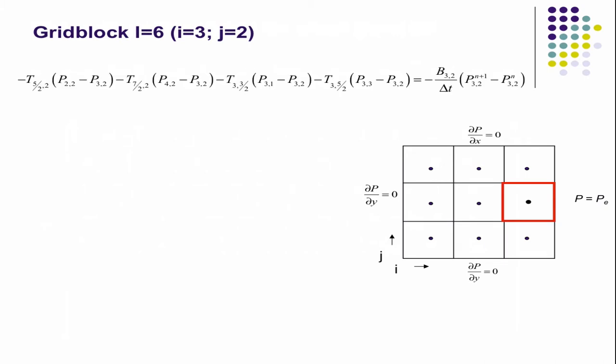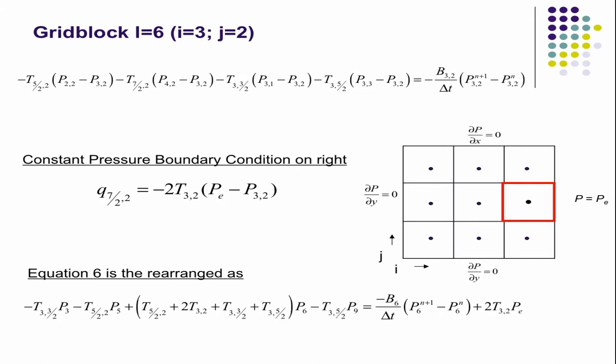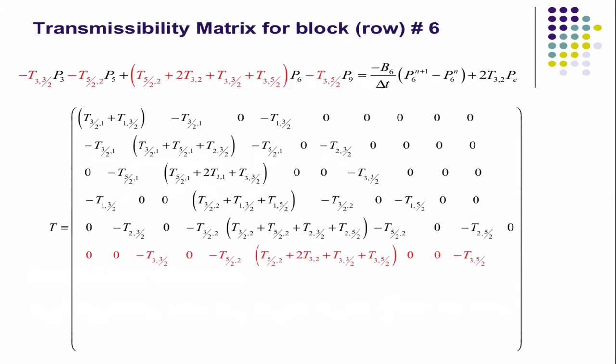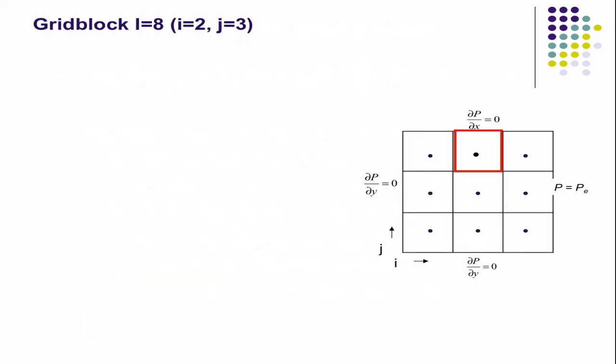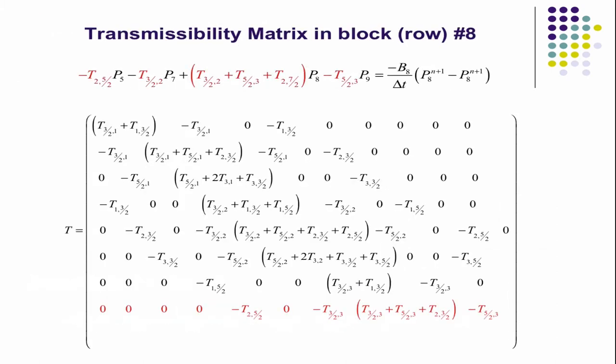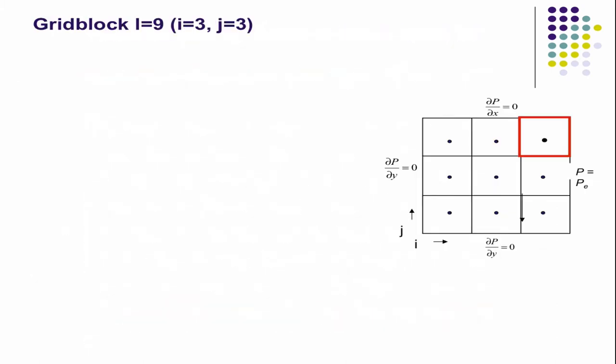This one now you have a well. There's not a well on that one. But you have to deal with the pressure boundary condition again. So you get this entry. That one's pretty easy. That one's even easier. And then finally in this one, now you have a constant bottom hole pressure well.